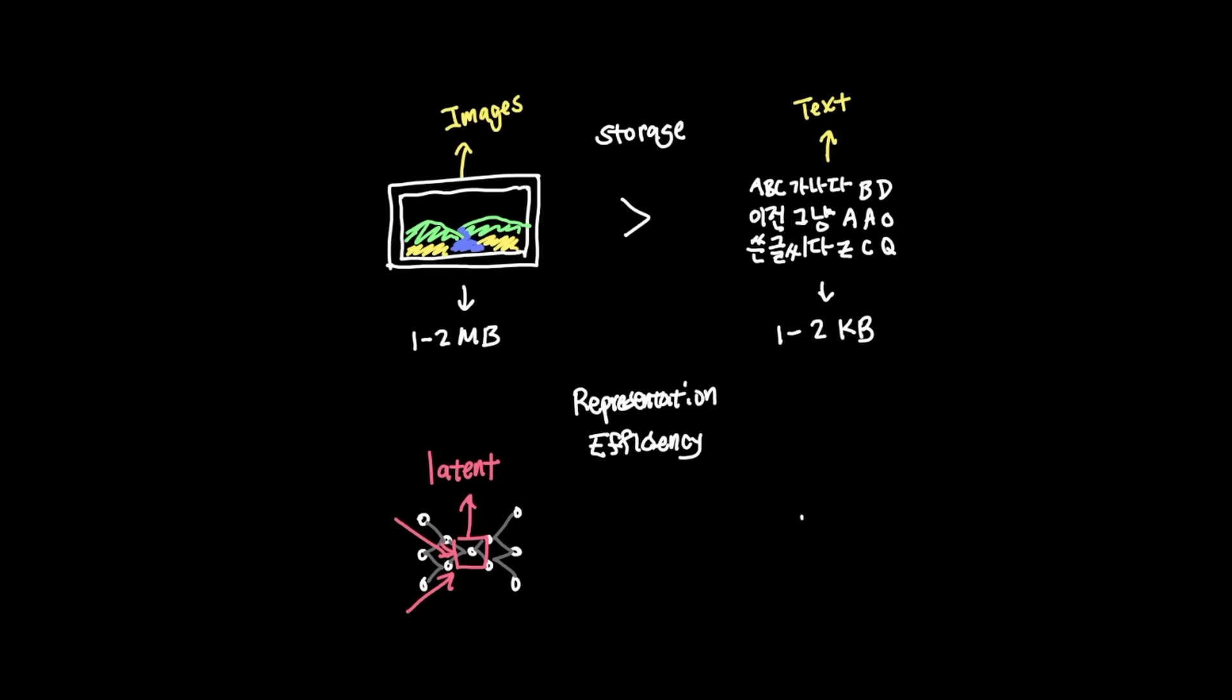And one important concept to clarify here is that images aren't necessarily smaller than text in terms of storage. As a matter of fact, we all know that images take up more space than text in their storage. But what we're talking about here is representation efficiencies, where the latent representation of an image can be far more dense in information than text, where the structure is constrained by tokens as its lowest common denominator.